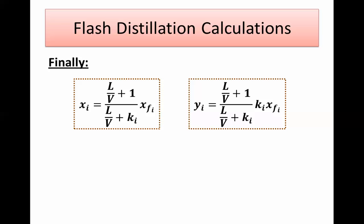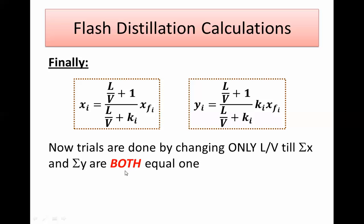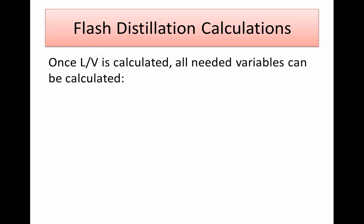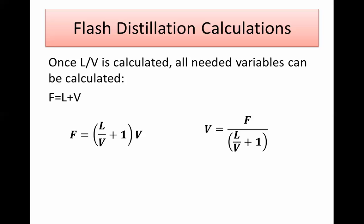You perform trial and error on L/V until both Sigma X and Sigma Y — the summation of all liquid compositions and all vapor compositions — equal 1. It is not a valid solution if Sigma X equals 1 but Sigma Y does not equal 1; both must equal 1. Once you have L/V, you can simply calculate V and L from the feed flow rate, and all other calculations follow easily.